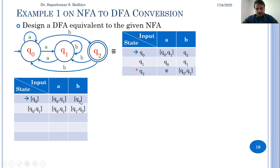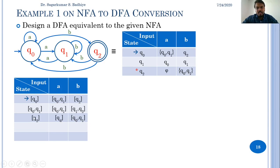Next, we process state [q2] in the present state column. From the NFA table, q2 on 'a' goes to phi, but a DFA cannot have phi, so we add a dead state qd. q2 on 'b' goes to {q0, q1}, so we merge to get state [q0, q1], which is already in the table. The new state from previous steps is [q1, q2], which is not yet in the present state column, so we add it.